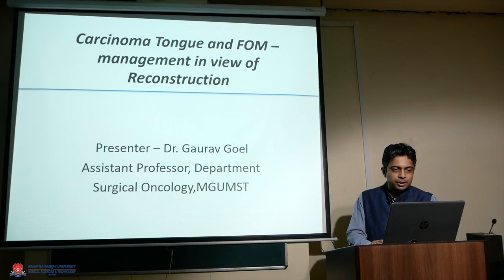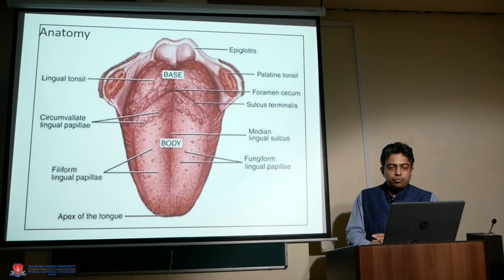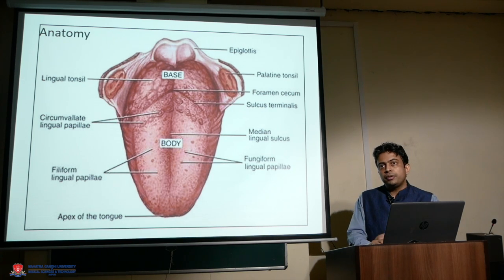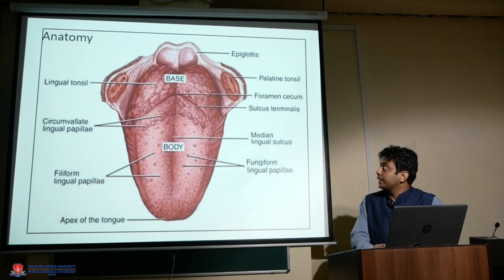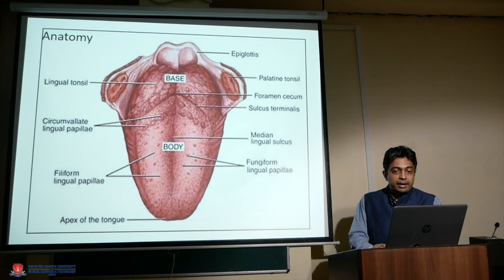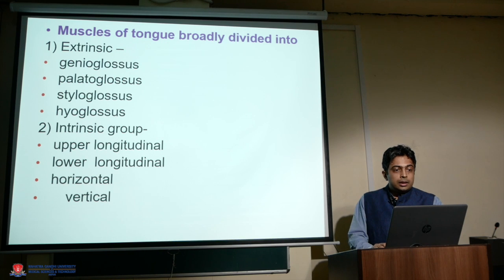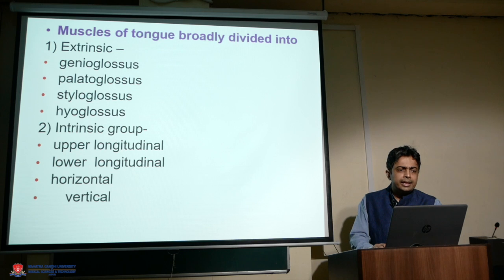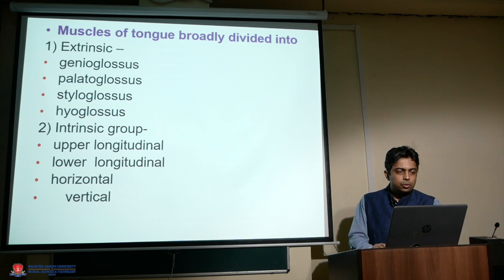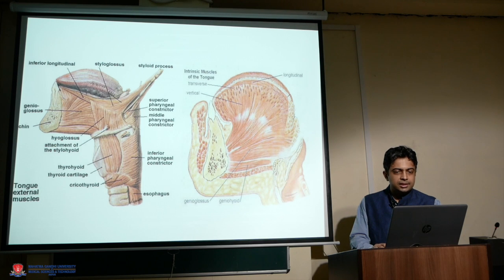This diagram shows the anatomy of the tongue, which is grossly divided into the anterior two-thirds and base of tongue by the circumvallate papillae. The muscles of the tongue are broadly classified into extrinsic and intrinsic groups. Extrinsic muscles include genioglossus, palatoglossus, styloglossus, and hyoglossus. Intrinsic muscles include upper longitudinal, lower longitudinal, horizontal, and vertical groups.